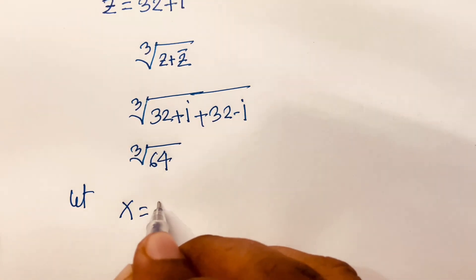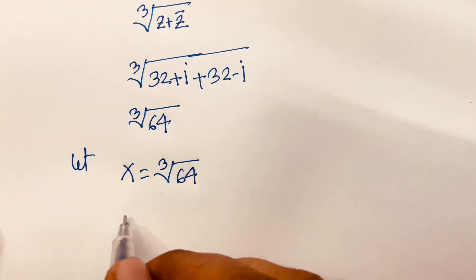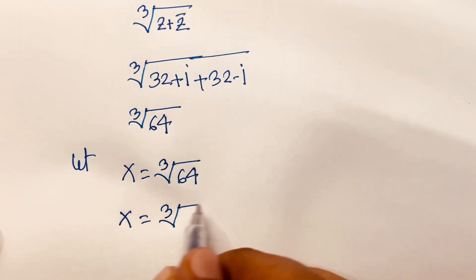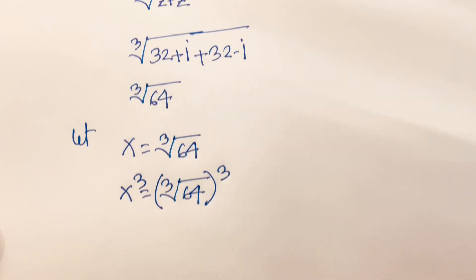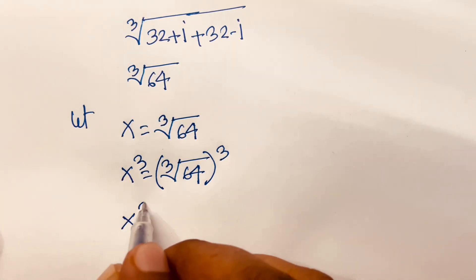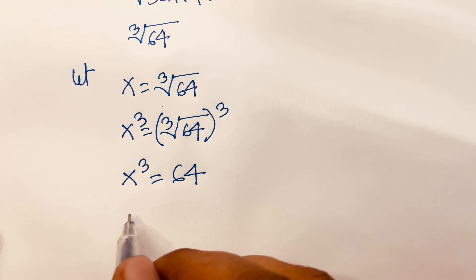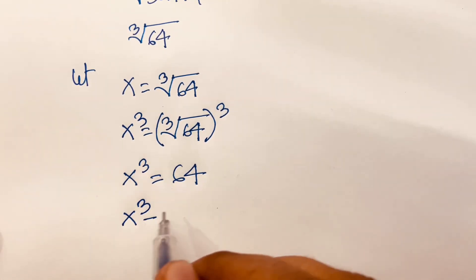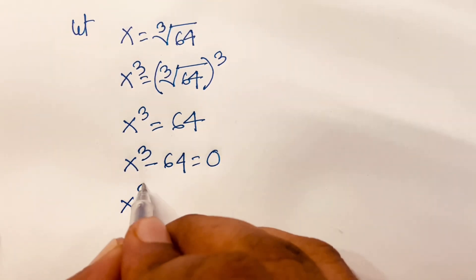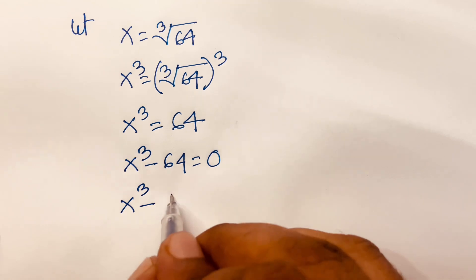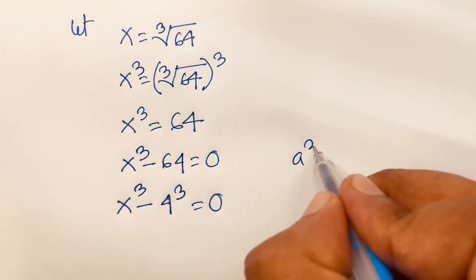Let x equal the cube root of 64. Then x cubed equals 64. This gives us the equation x cubed minus 64 equals 0. We can write this as x to the power 3 minus 4 to the power 3 equals 0.